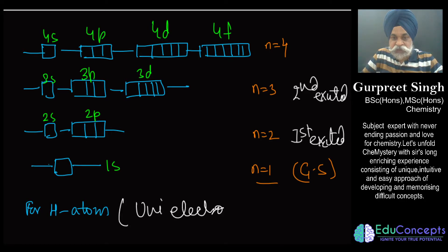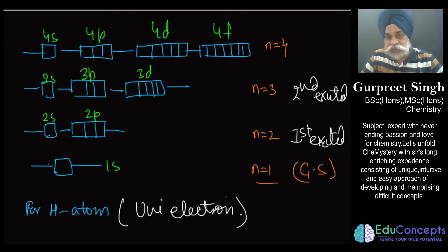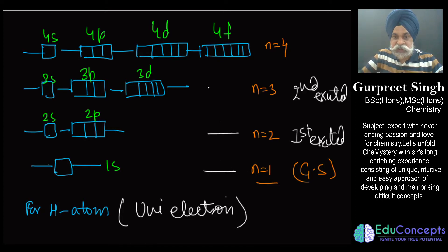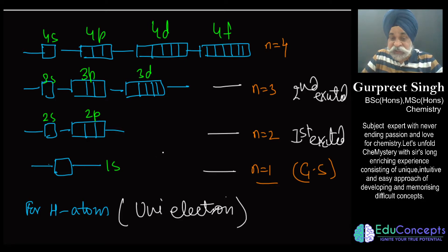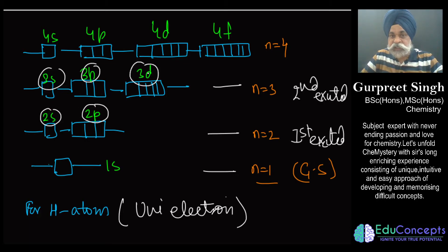In the case of hydrogen atom, this is a uni-electron system — there is only one electron attracted by the nucleus, and this electron experiences no repulsion. So in the first, second, or third shell of hydrogen, the sub-shells present in a given shell have the same energy. For example, 2s and 2p have same energy, and 3s, 3p, 3d have same energy.